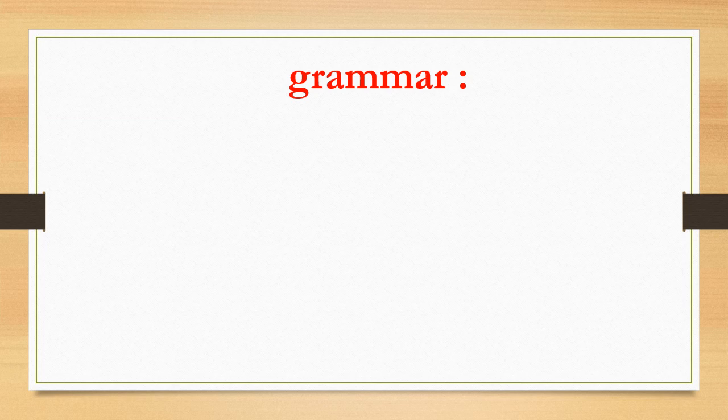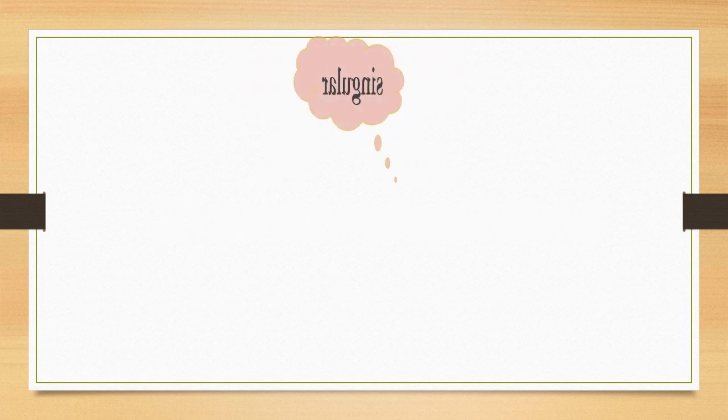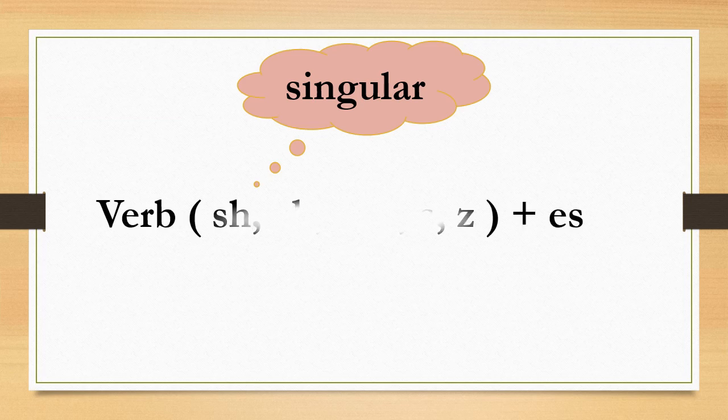Let's revise the grammar of the last lesson. يلا نراجع مع بعض القاعدة اللي درسناها في الدرس اللي فات وهي The present simple tense. لو زمن المضارع البسيط. احنا قلنا المرة اللي فاتت مع السنجلر المفرد اللي هو هي وشي وقت بنضيف للفعل اس. Also we said if the verb ends with ش or ch or x or o or s or z, we add to the verb es.